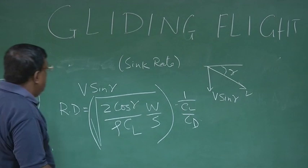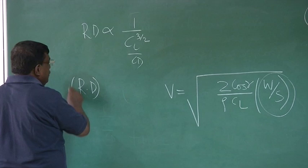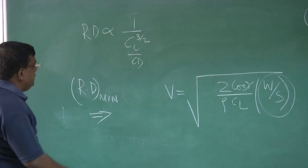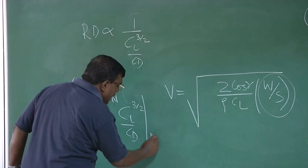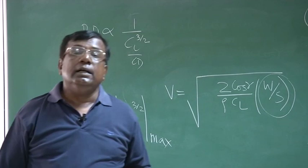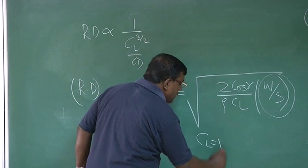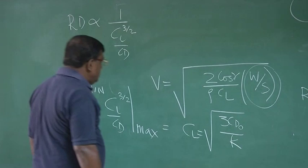If I see now this rate of descent, I could easily see that it is proportional to CL to the 3 by 2 by CD. This CL is here, CL half is here. So CL 3 by 2 and CD goes in the numerator, CL 3 by 2 by CD. So if I want rate of descent or sink rate to be minimum, what does it mean? It means other things remaining constant, CL 3 by 2 by CD should be maximum. You are also familiar with this condition. What this condition gave us? It simply means that I should fly at a CL which is equal to square root of 3 CD naught by K. Clear?